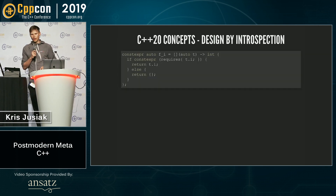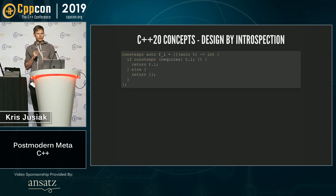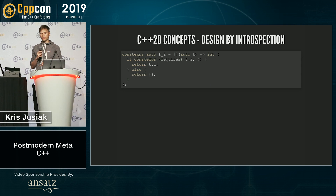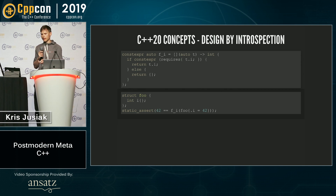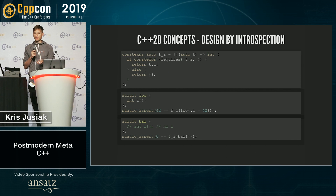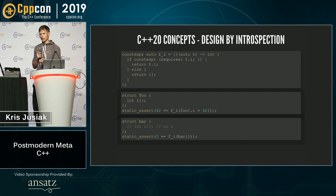Yet another feature which allows us to do TMP nicer is C++20 concepts designed by introspection — not fully yet, but partially. You can have unnamed concepts with the requires clause expression. In our case, if you have a foo which has an I, it will return 42. Otherwise, if you have a bar which doesn't have the I, it will return 0 — not a hard compilation error. The key thing to notice is that we don't have to actually name the concept.